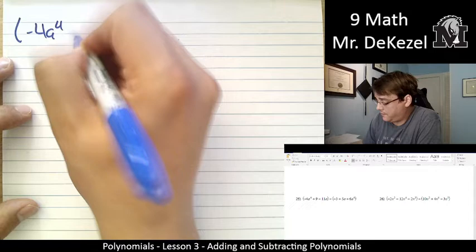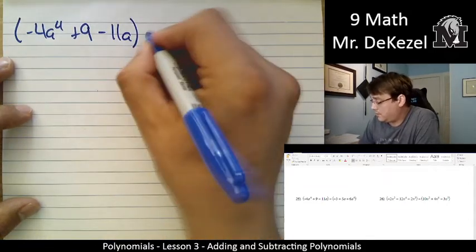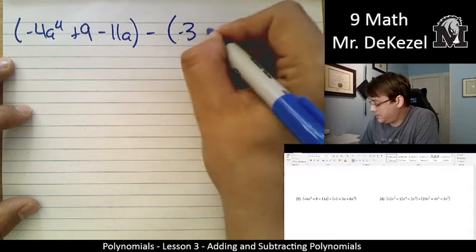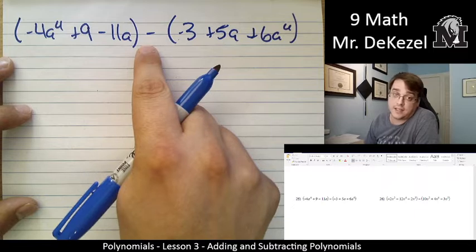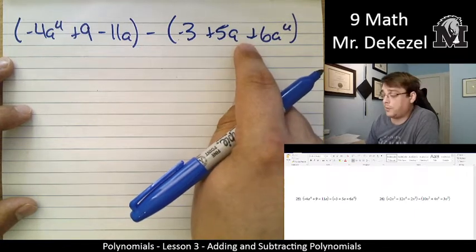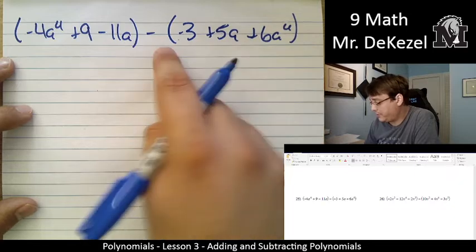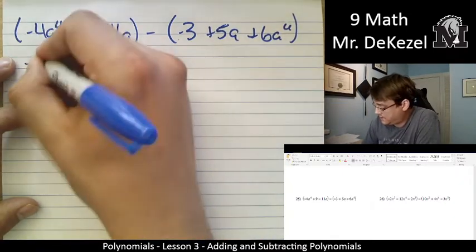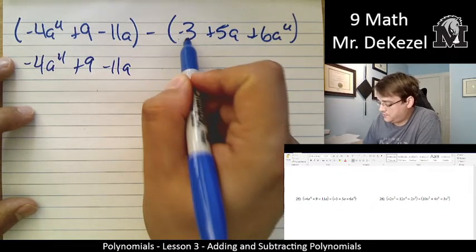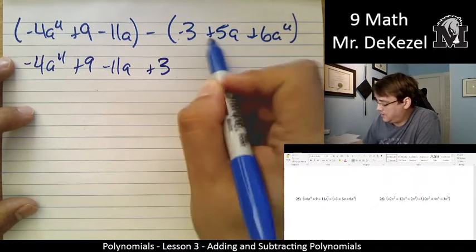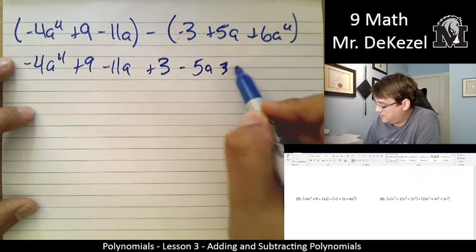Minus 4a to the power of 4 plus 9 minus 11a minus minus 3 plus 5a plus 6a to the power of 4. We're subtracting this polynomial. So when we rewrite this without brackets, we are going to flip all of these signs. This was minus 3, so now it's plus 3. This was positive, so now it's minus.